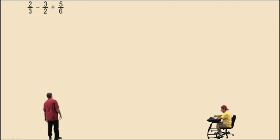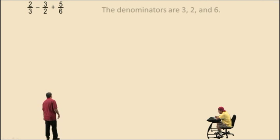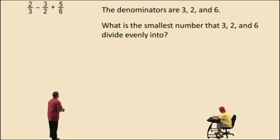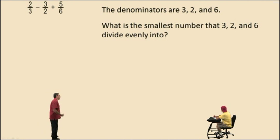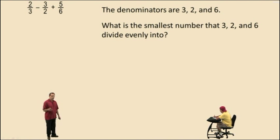2 thirds subtract 3 halves plus 5 sixths. Now, notice here the denominators are 3, 2, and 6. To find the lowest common denominator, ask yourself: what is the smallest number that 3, 2, and 6 divide evenly into? Here's a kung fu move: always start with the largest denominator and check to see if the other denominators divide evenly into it. Because if they do, like in this case, that is the lowest common denominator.